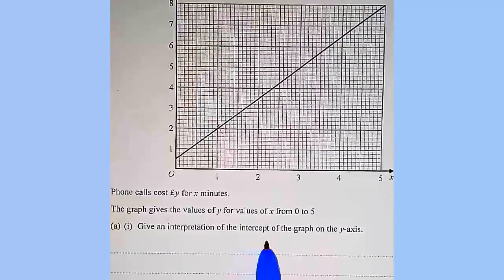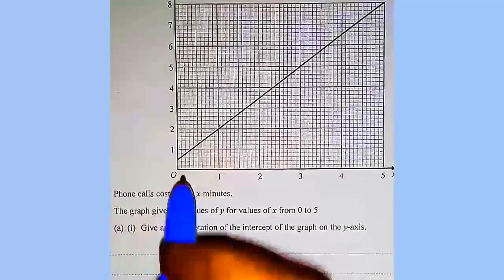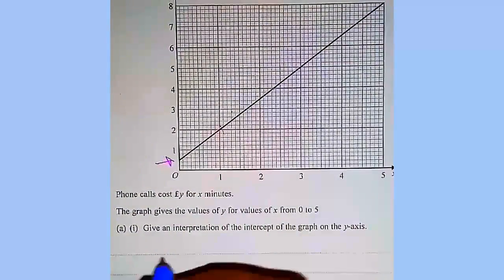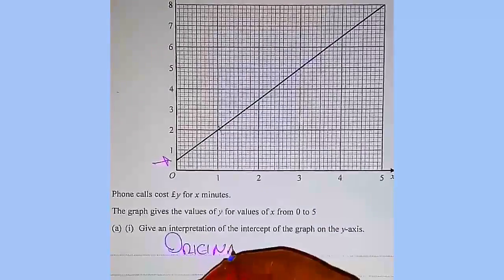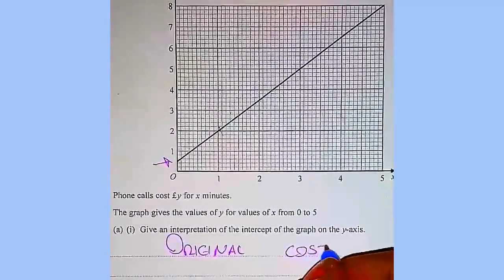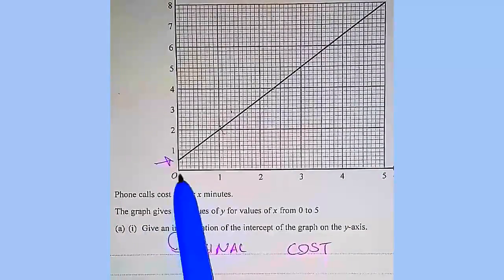The interpretation for the intercept of the y-axis is this point here. Now essentially all you have to write there is that's the original cost, or that's the line rental. There's something you have to pay if you don't use your phone.